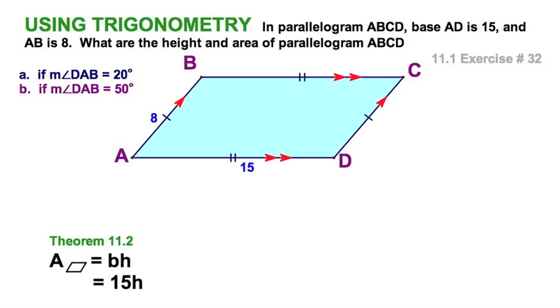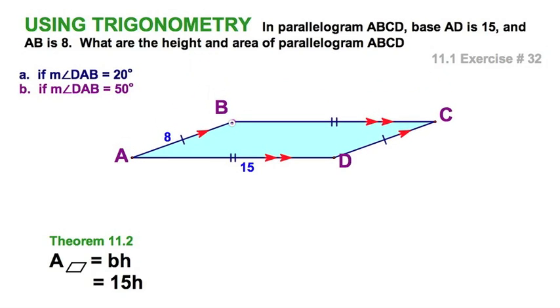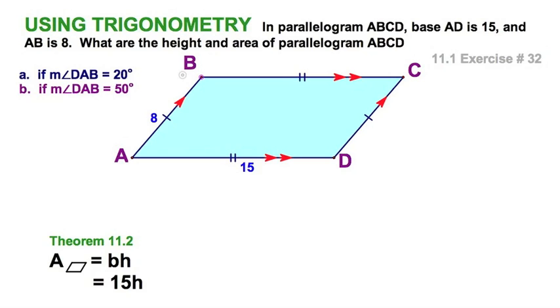Since the area of a parallelogram is base times height, if I use 15 for both cases it's fixed, but the height is changing. So this will be a smaller area than this one. We just have to solve for the height, and for that we're going to use our trig.